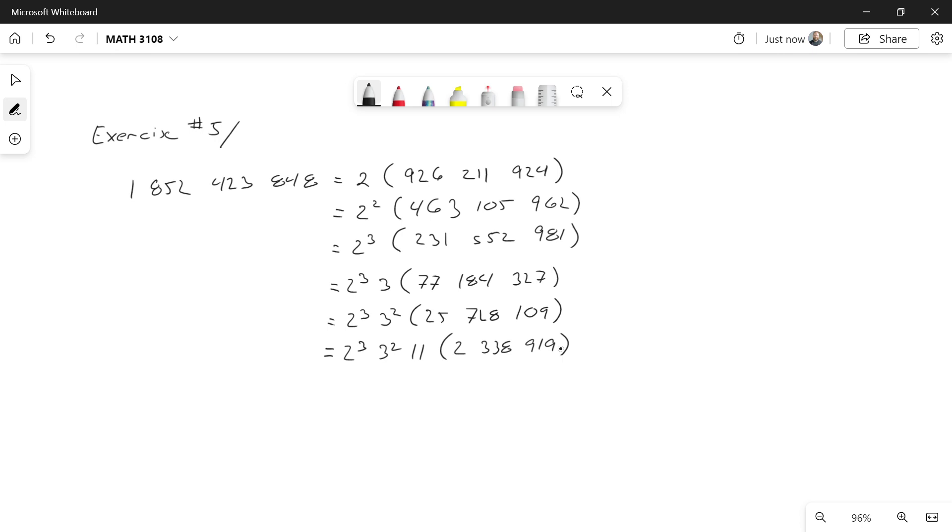And again, I'm going to notice that I can do 11 twice. So 2 to the 3, 3 to the 2, 11 to the 2. And what I'm left with is 212,629.